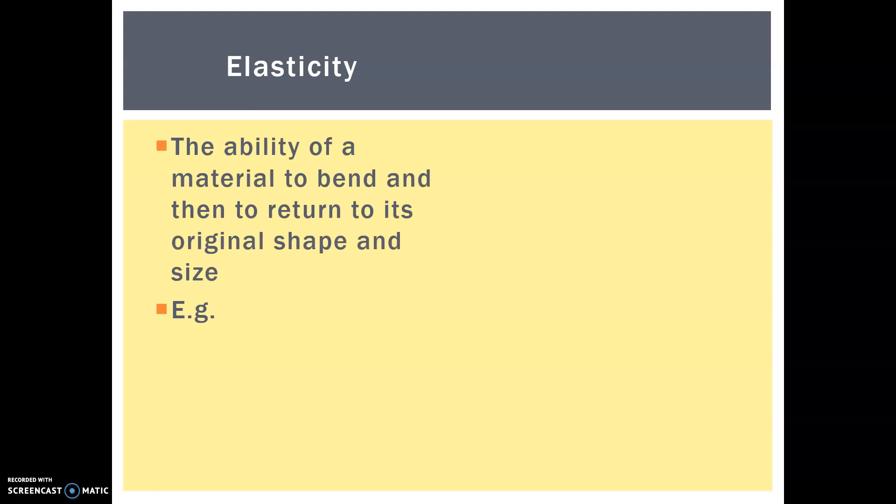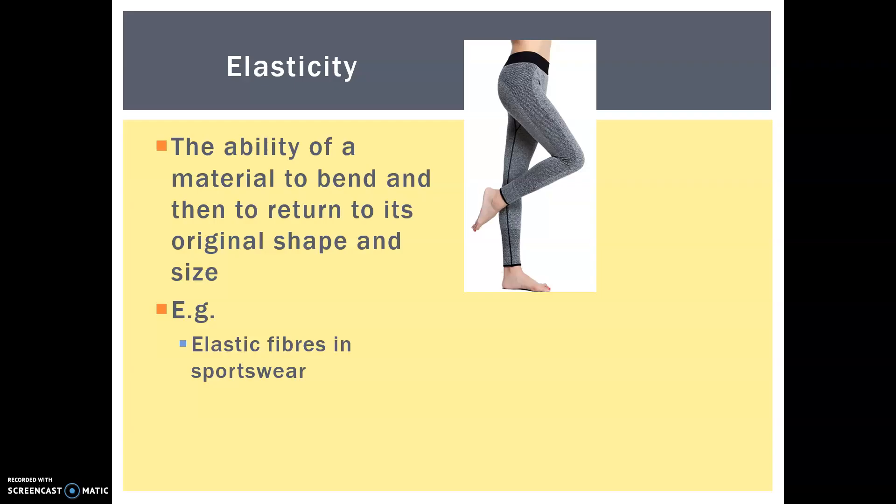Elasticity, this one's easy. It's the ability of a material to bend and return to its original shape or size. So for instance, elastic fibers in sportswear, that's why it grips onto you. That's why it allows you to flex out. If it was made of cotton, for instance, then it wouldn't do that anywhere near as readily.